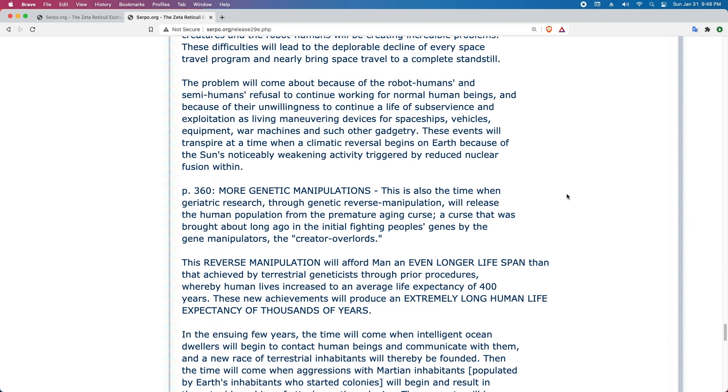Page 360. More Genetic Manipulations: This is also the time when geriatric research through genetic reversal manipulation will release the human population from the premature aging curse, a curse that was brought about long time ago in the initial fighting people's genes by a gene manipulator, the creator overlords. This reverse manipulation will afford man an even longer lifespan than that achieved by terrestrial geneticists through prior procedures, whereby human lives increase to an average life expectancy of 400 years. These new achievements will produce an extremely long human life expectancy of thousands of years.